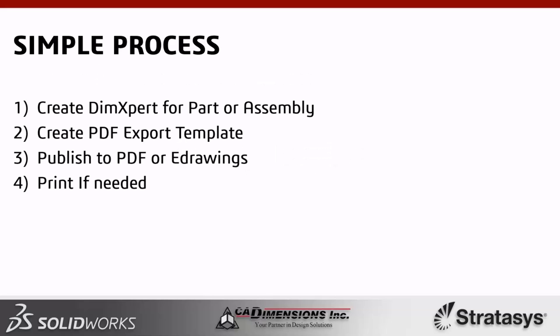With SOLIDWORKS, it's a very simple process technically, but it's harder to get people to accept a different format — opening a 3D PDF or eDrawings. The process has three steps: first, create DimExpert dimensions for parts or assemblies inside SOLIDWORKS; second, create a PDF export template that accepts all the information you'd typically put on a 2D drawing; third, publish it. For those not ready to stop printing, you can still follow your existing process and print views with all associated dimensions.